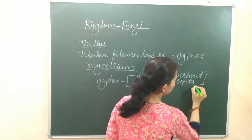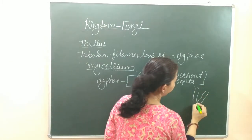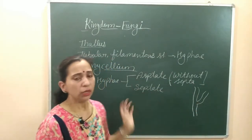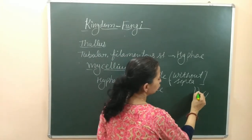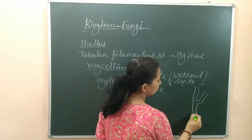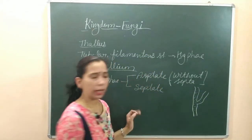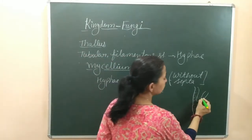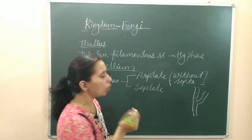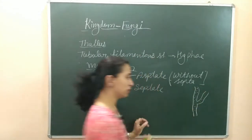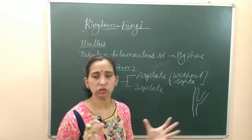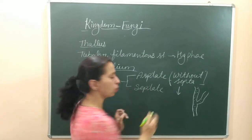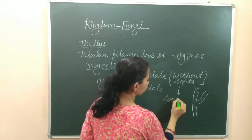In aseptate hyphae, there is no partition and no cell wall formed between the hyphae. When nuclear division happens but cell division does not occur, it remains without formation of a cell wall, and this type of aseptate hyphae is formed. In aseptate hyphae, a multinucleate structure is formed. This condition, where many nuclei are present together, is known as the coenocytic condition.